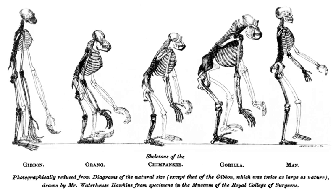In young Earth creationism and baraminology, a central tenet is that evolution can explain diversity in a limited number of created kinds which can interbreed, while the formation of new kinds — which they call macroevolution — is impossible. This acceptance of microevolution only within a 'kind' is also typical of old Earth creationism. Scientific organizations such as the American Association for the Advancement of Science describe microevolution as small-scale change within species, and macroevolution as the formation of new species, but otherwise not being different from microevolution.